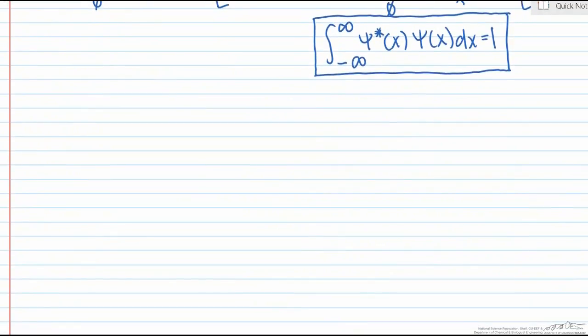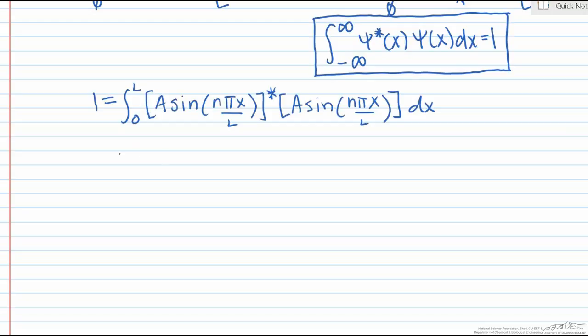Okay, so let's get to the math. In this case, our particle is going to be located between x = 0 and x = L. And so 1 is going to be equal to the integral from 0 to L of ψ* times ψ dx.